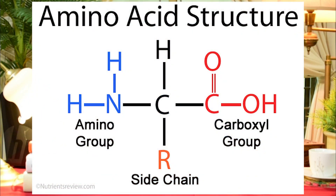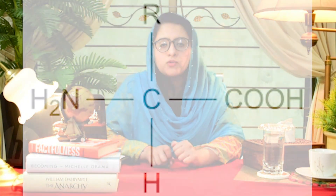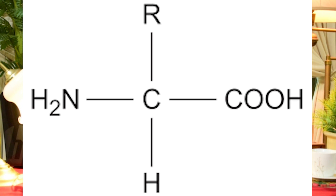We will now draw the basic amino acid structure in detail. You can see that the carbon is in one direction. The amino acid structure is the same — only the R group differs. If the R group is hydrogen, it is glycine; if it is a methyl group, it is phenylalanine. If there are other groups like phenylalanine, the amino acid structure remains the same.